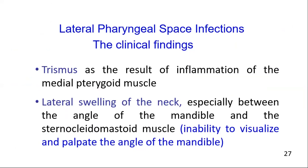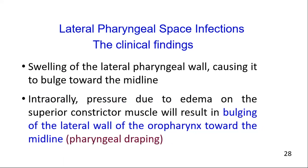Clinically, extension of infections to the lateral pharyngeal space will result in trismus due to involvement of the medial pterygoid muscle, as well as cellulitis or fluctuant swelling of the lateral neck. This swelling is localized between the inferior border of the mandible and the sternocleidomastoid muscle, and therefore a significant finding is the inability to visualize and palpate the angle of the mandible. This swelling causes the lateral pharyngeal space to bulge towards the midline, and pressure due to edema on the superior constrictor muscle will result in bulging of the lateral wall of the oropharynx towards the midline — known as pharyngeal draping.